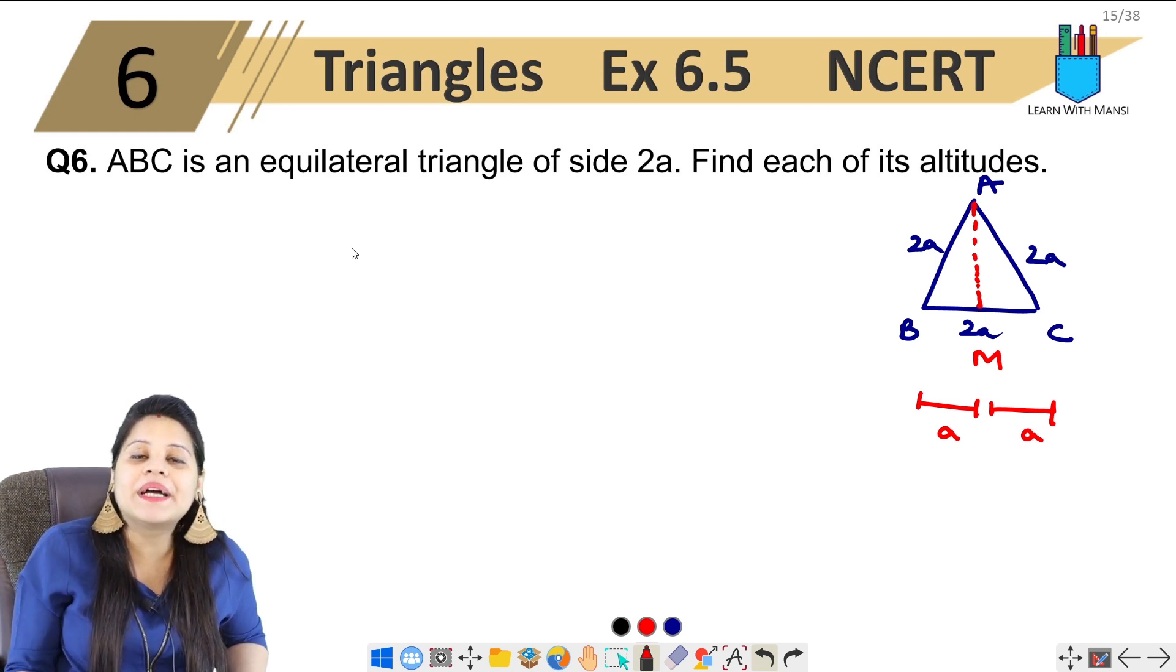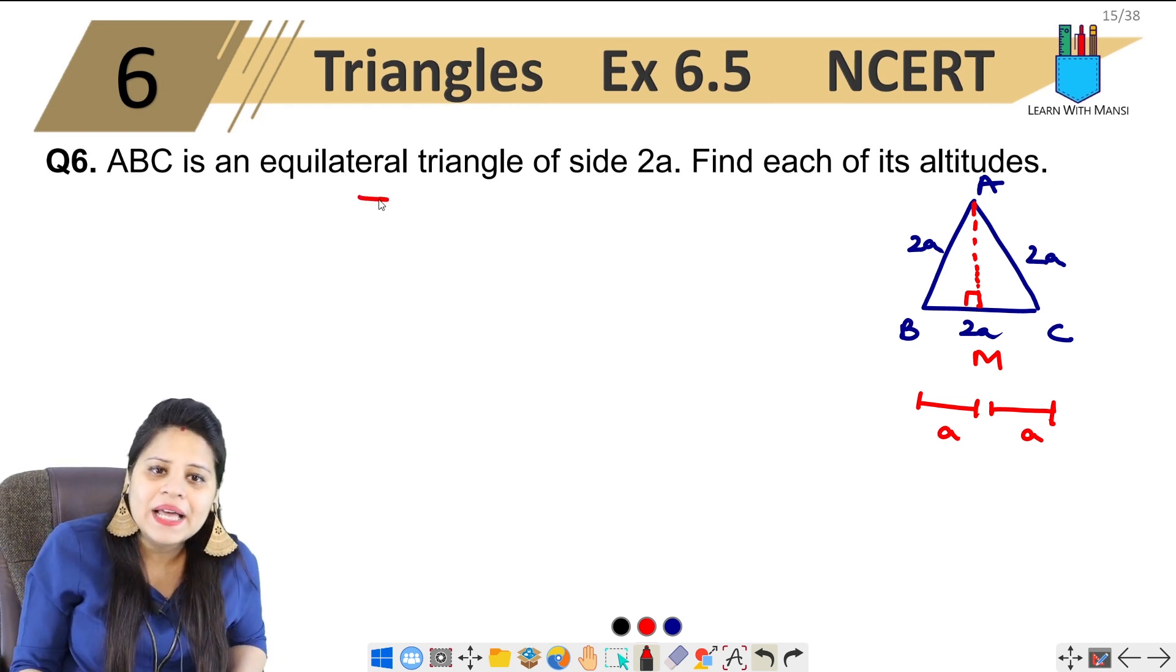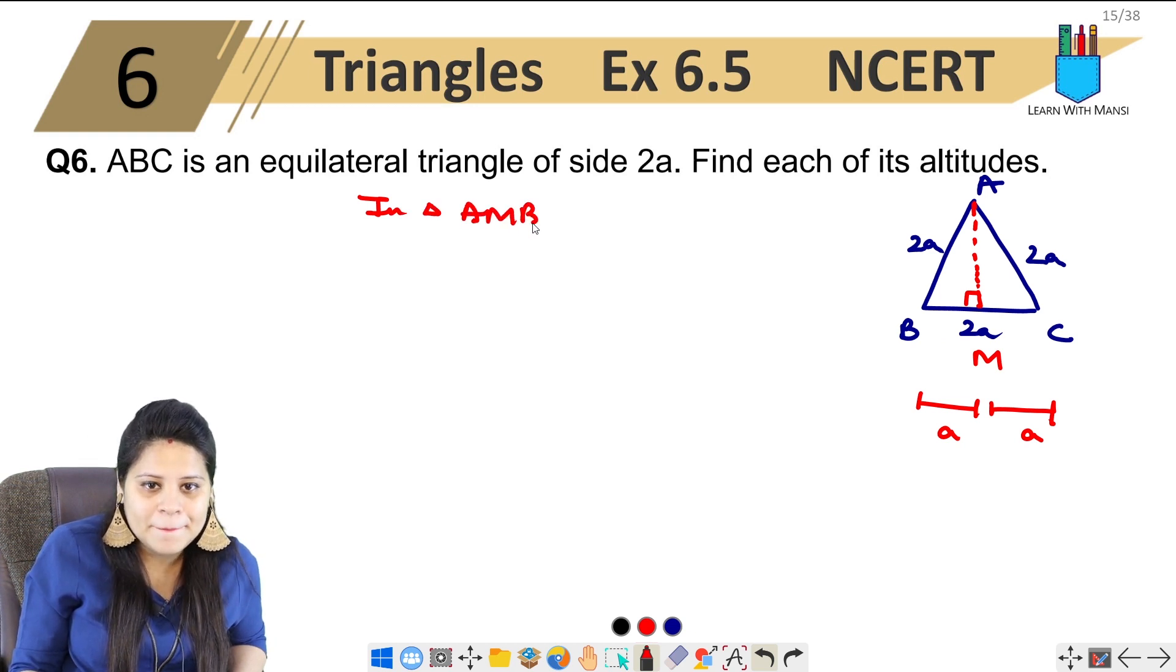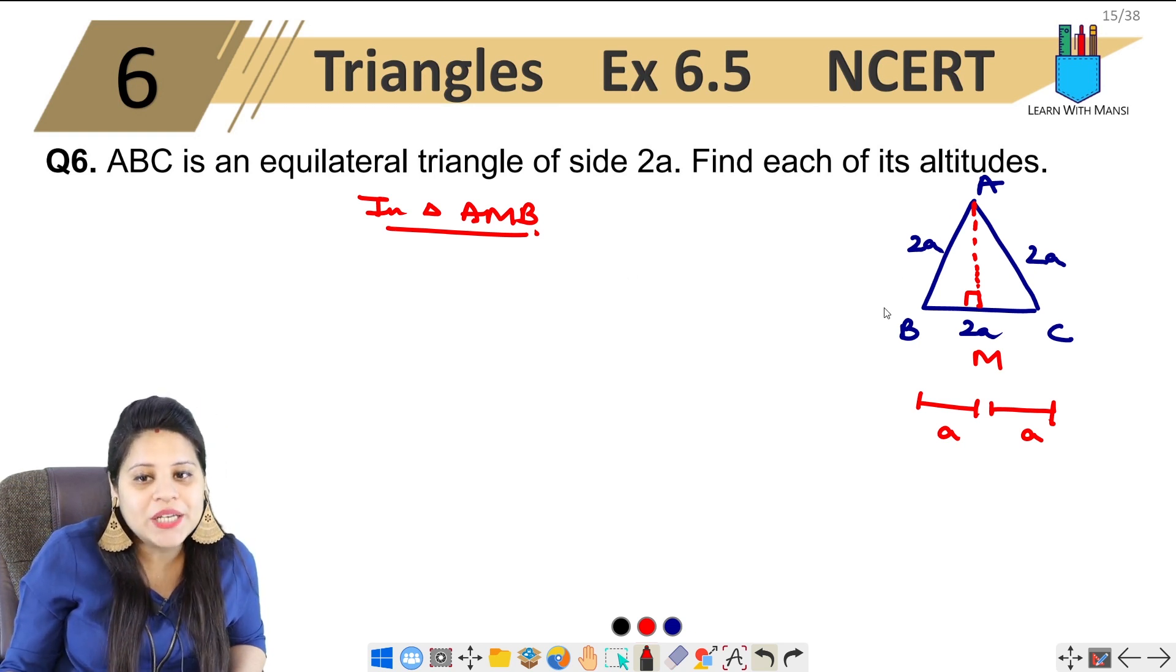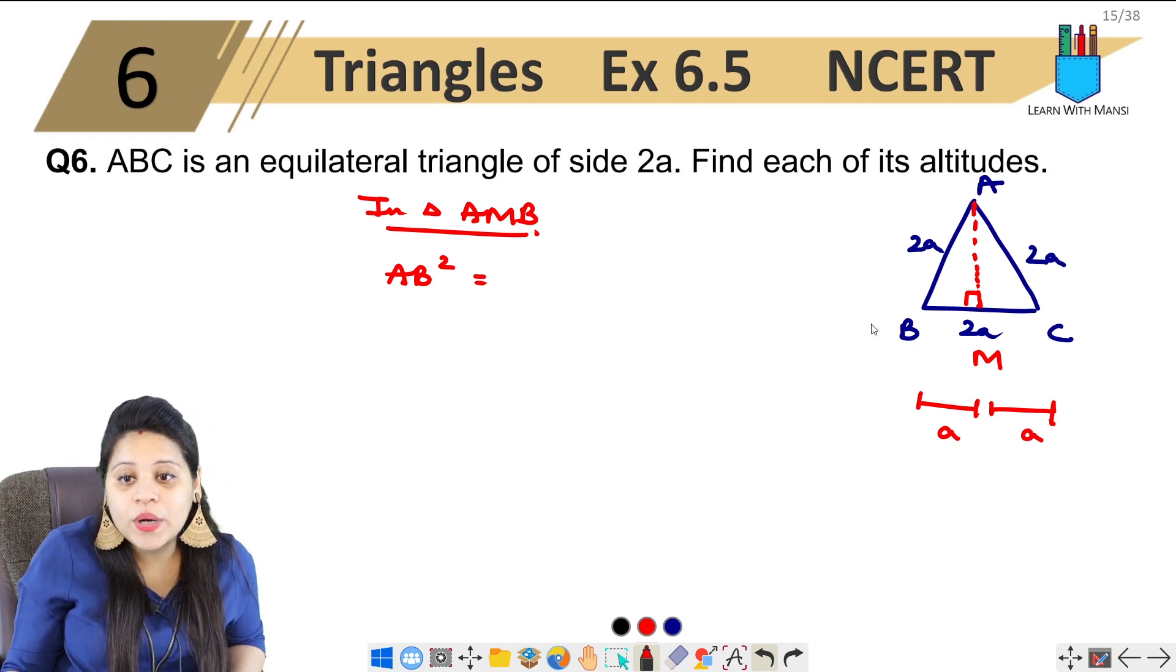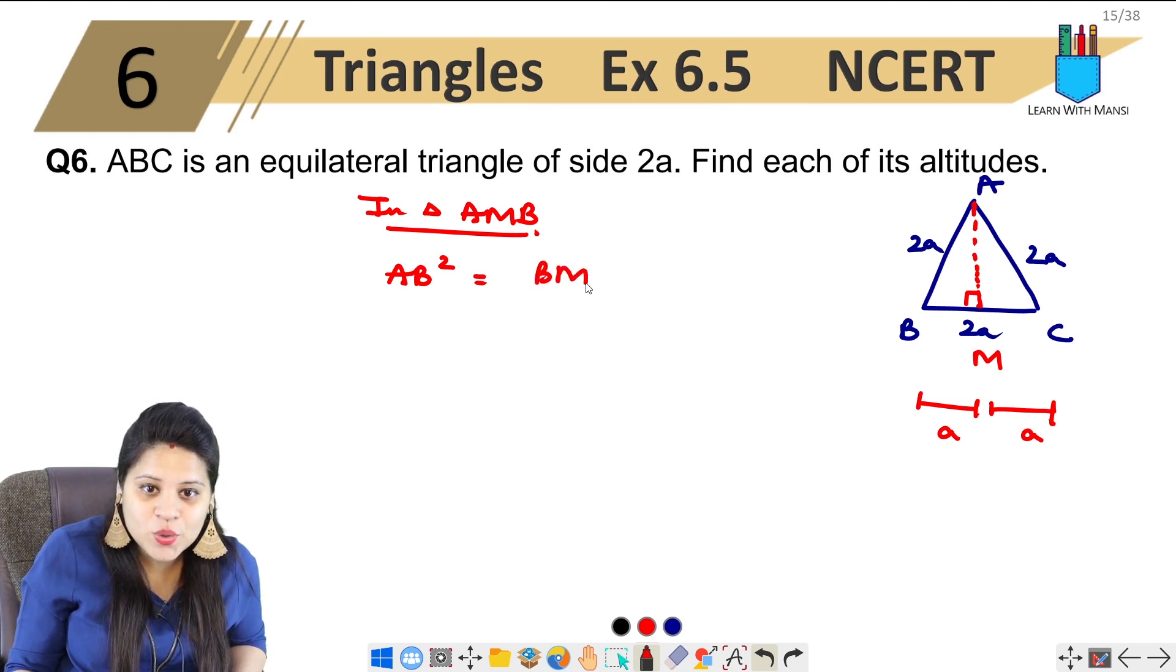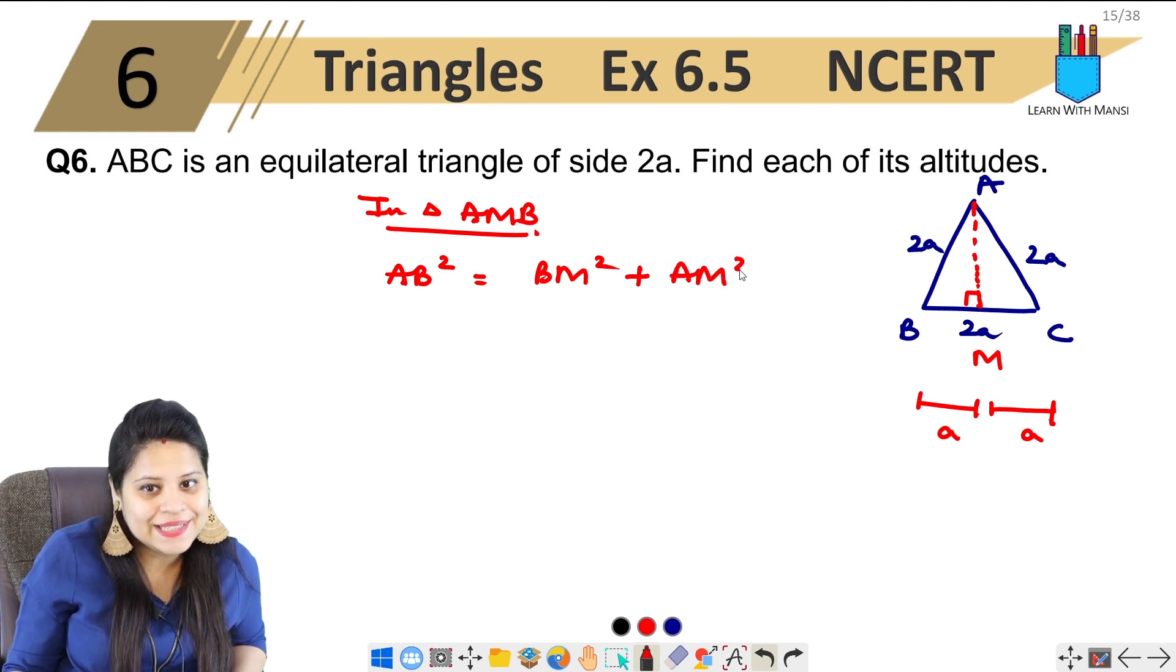Here if we have altitude, then this is 90 degree angle. Triangle AMB or AMC, in triangle AMB, 90 degree angle, Pythagoras theorem use. What is hypotenuse? AB. AB square equals BM square plus AM square. Clear?